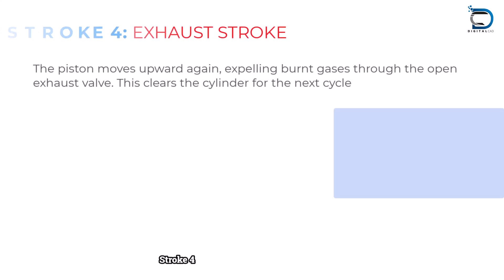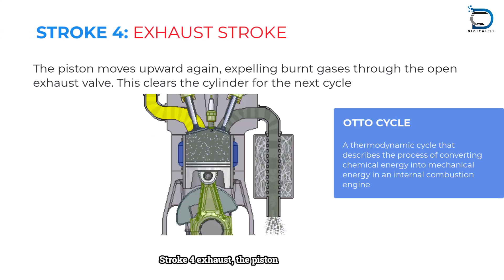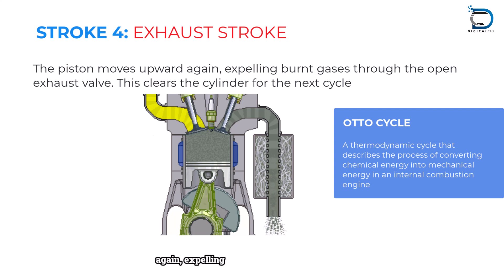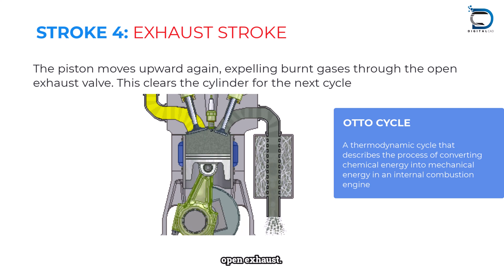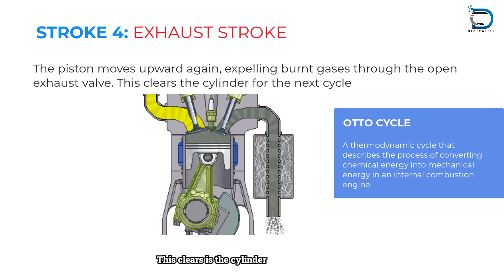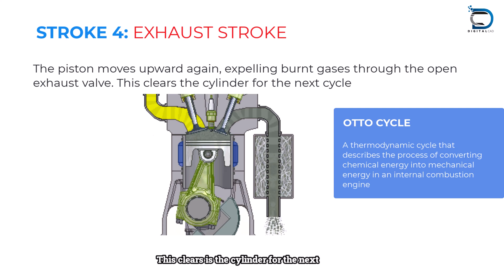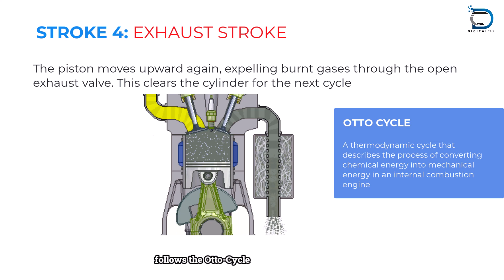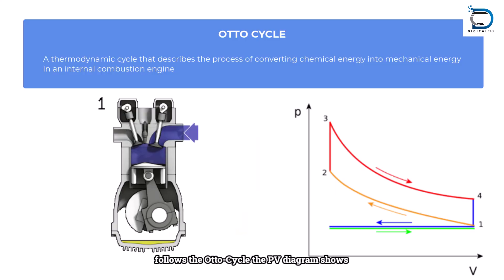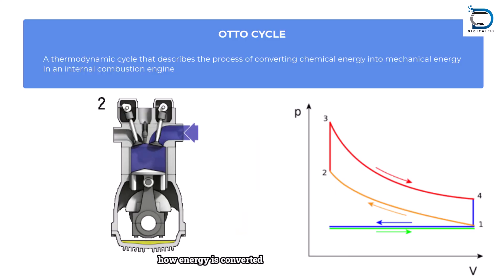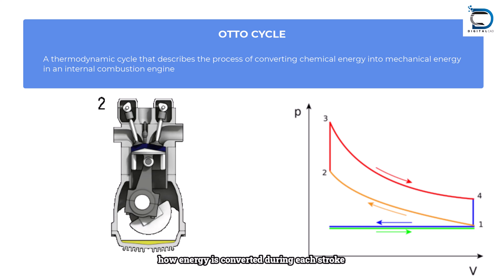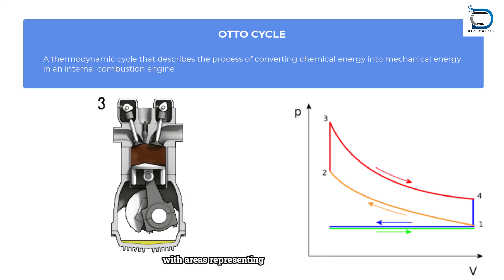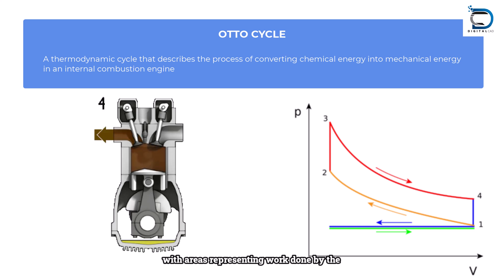Stroke 4 — Exhaust: The piston moves upward again, expelling the burnt gases through the open exhaust valve. This clears the cylinder for the next cycle. From a technical perspective, this process follows the Otto cycle. The PV diagram shows how energy is converted during each stroke, with areas representing work done by the engine.